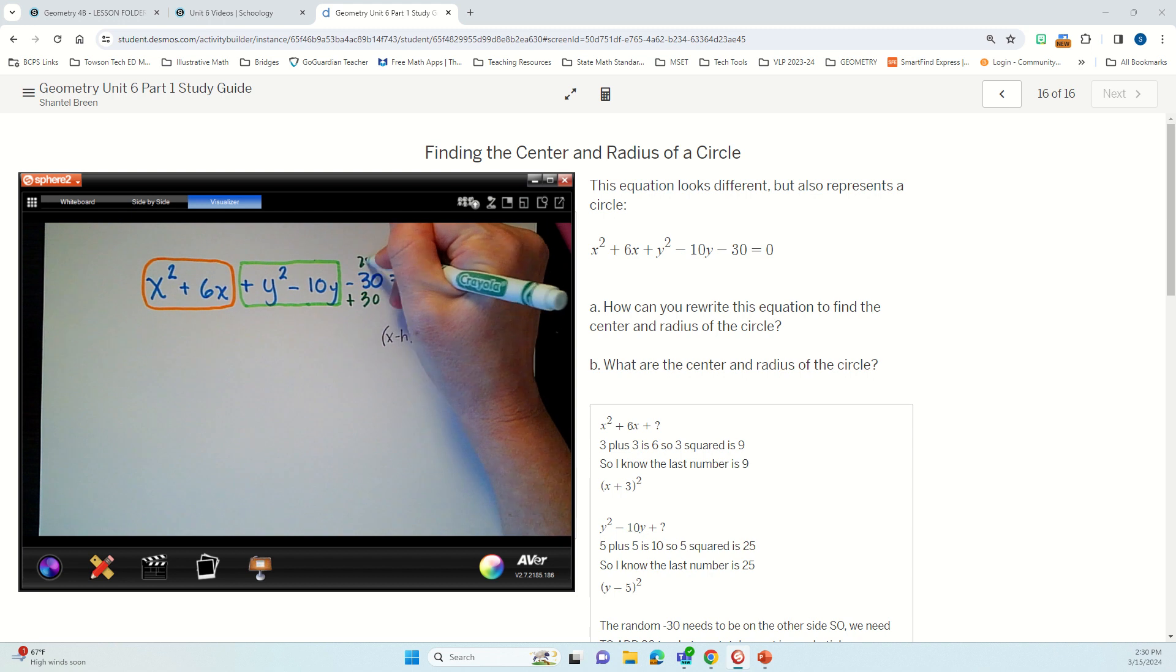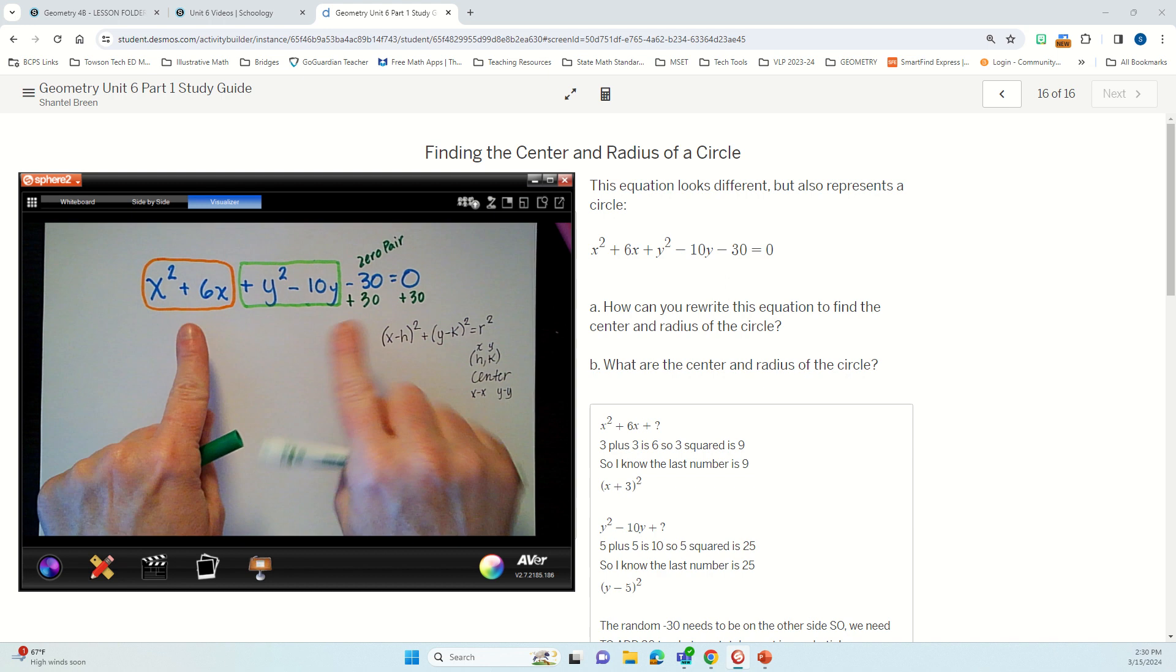So I made my zero pair. So I don't want to forget about this 30. He's important. He's going to come in later in the play. I just have to figure out what the other two numbers are that will go with that 30 that will add up to my radius.